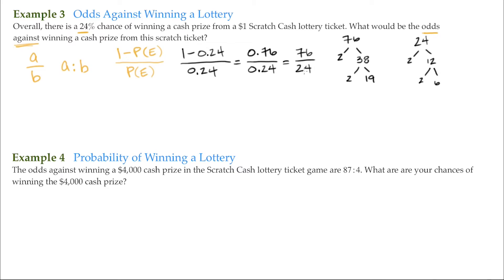So then 76 over 24 can be written as 2 times 2 times 19, and 24 can be written as 2 times 2 times 6. Our factors cancel. That's 19 over 6, or odds of 19 to 6.